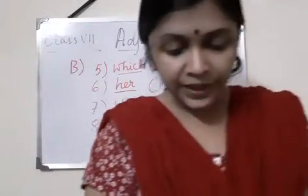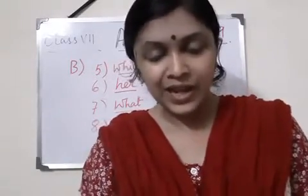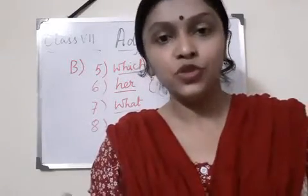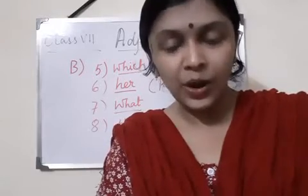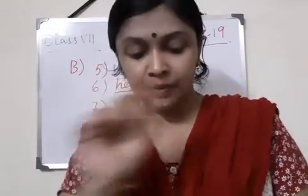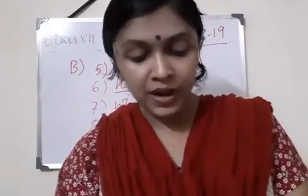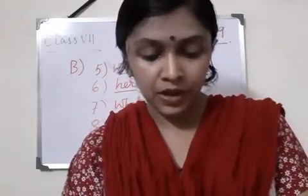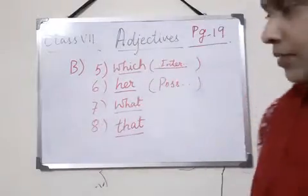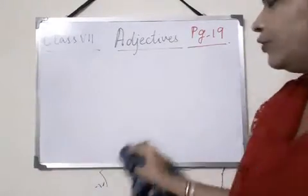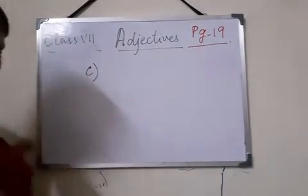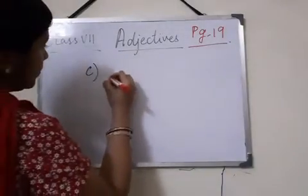Exercise C: You have to identify the adjectives in the sentences and state their kind. The first one has been done for you — 'I have found my pen.' Number 2: It was a rainy day — underline 'rainy,' adjective of quality. Number 3: Children, you must have finished your class work — underline 'your,' possessive adjective. Number 4: Which fruit is available in the market? — 'which,' interrogative adjective.